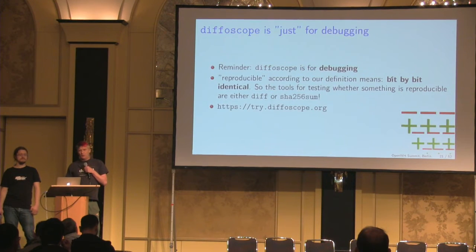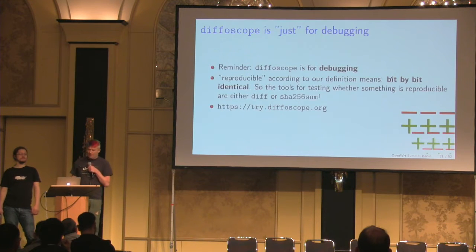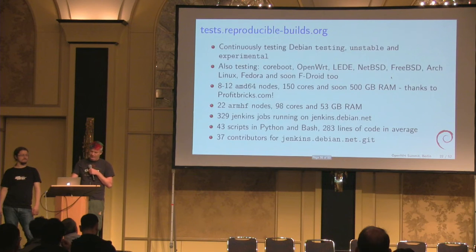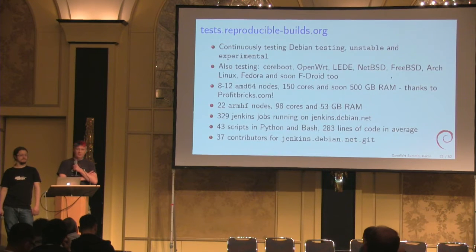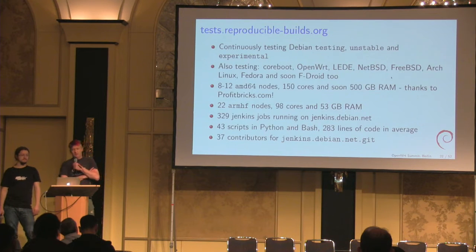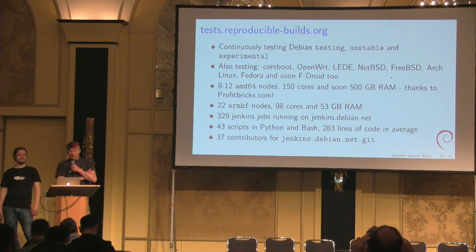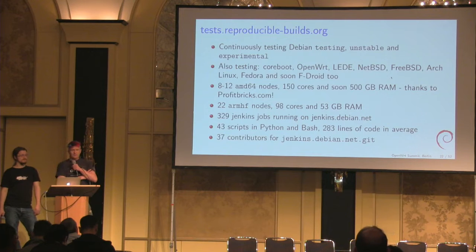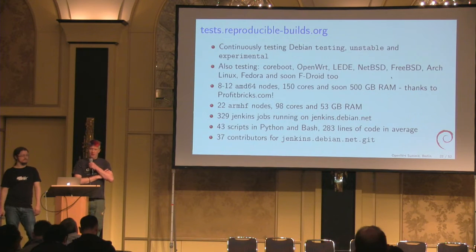There's trydiffoscope.org, which is a web service so you don't have to install it — just upload files on the web page. There's also a command line client. Give Diffoscope a try. We also made the webpage TestReproducibleBuilds.org. In the beginning we only tested Debian, but now we also test OpenWRT, LEED, some BSDs, Arch Linux, Fedora, and also F-Droid. The ARM and AMD64 hardware is sponsored by Profitbricks — half a terabyte of RAM and 150 cores, so it's building Debian and other stuff really fast.